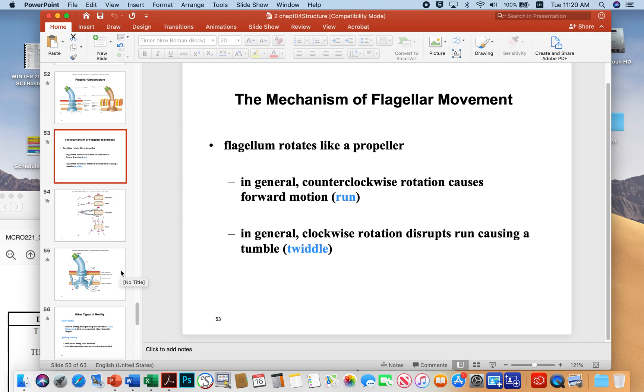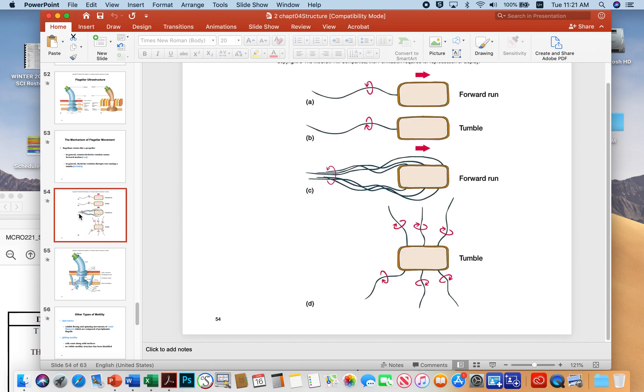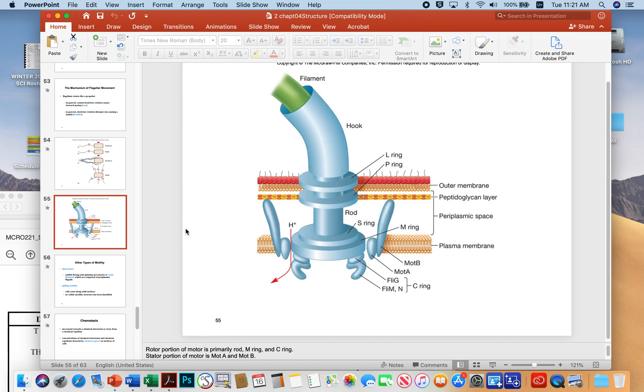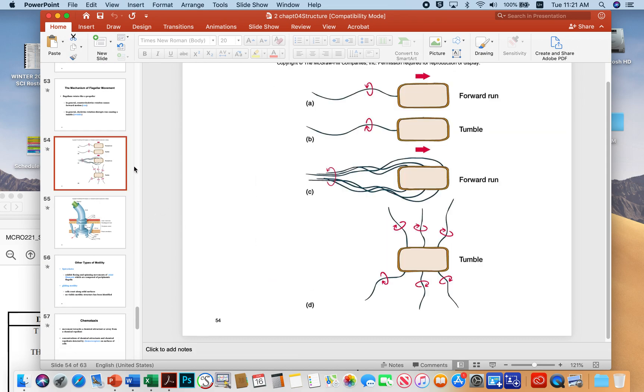If you ever take microbial physiology with me, I get into the details of how that happens a little bit better. A forward run as a result of counterclockwise rotation, a tumble that causes the microbe to vibrate in place and then change directions. Even with peritrichous flagella, the microbe is still counterclockwise and clockwise rotating its individual flagella. It just has a different appearance.